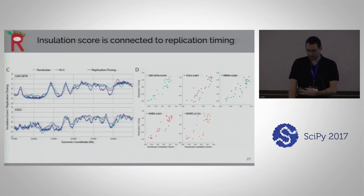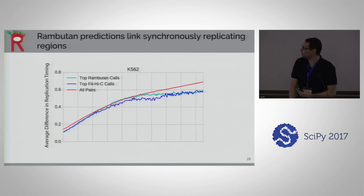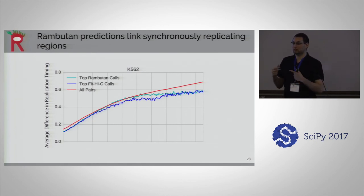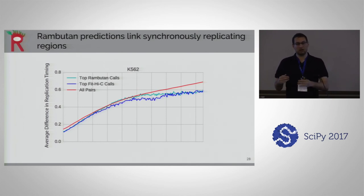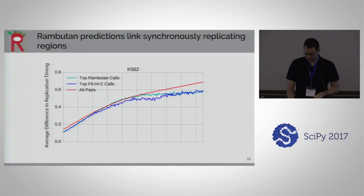We also found that insulation score is connected to replication timing, so Rambutan can be used to predict replication timing for novel cell types. Rambutan predictions can link synchronously replicating regions — regions Rambutan thinks are highly likely to be connected also replicate together. This phenomenon was discovered in the original FIT-HI-C paper, and Rambutan is basically mirroring FIT-HI-C, as you would hope.